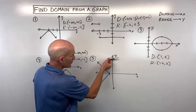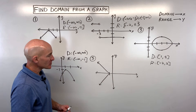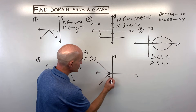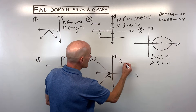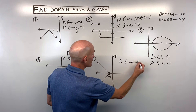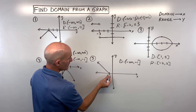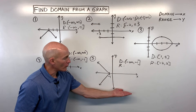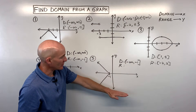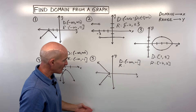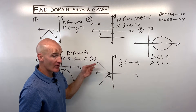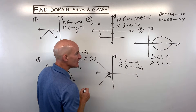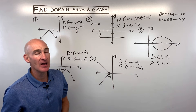For number five, for the domain I think about what x values can be — it's going from negative infinity all the way to negative one, including negative one. That's a closed circle, not open. So domain is (-∞, -1]. For the range, scanning from low to high in the vertical direction, this goes down forever to negative infinity and up forever, hitting all y values in between — so it's all real numbers, or negative infinity to positive infinity.